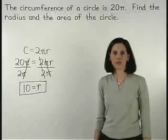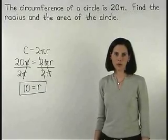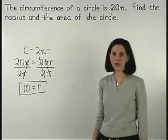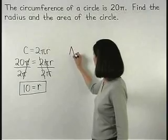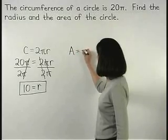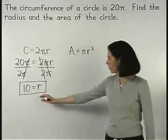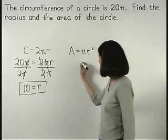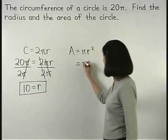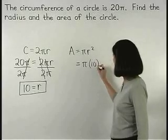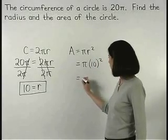Now to find the area of the circle, remember that the formula for the area of a circle is pi r squared. And since the radius of our circle is 10, we have pi times 10 squared, or 100 pi.